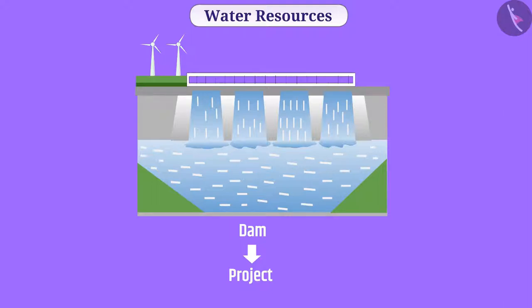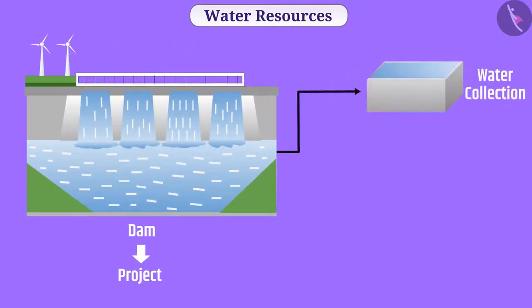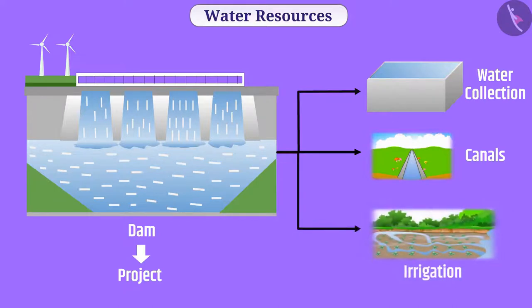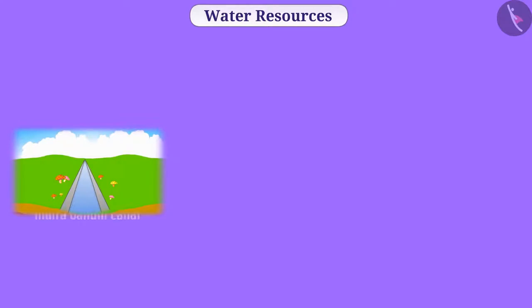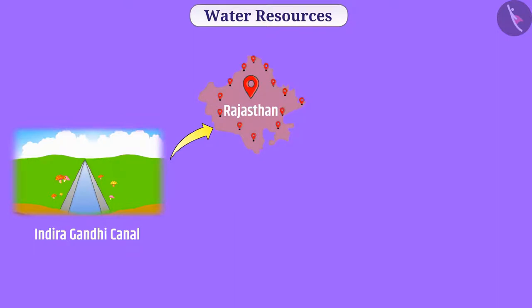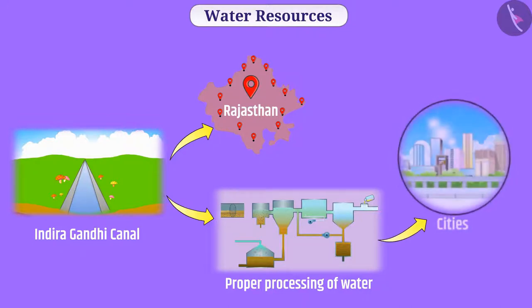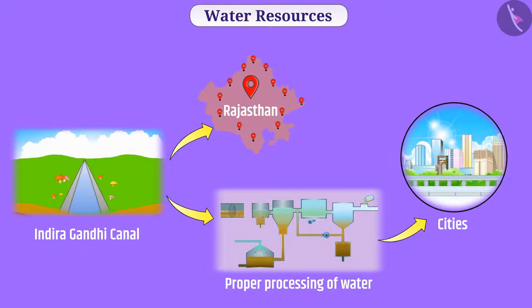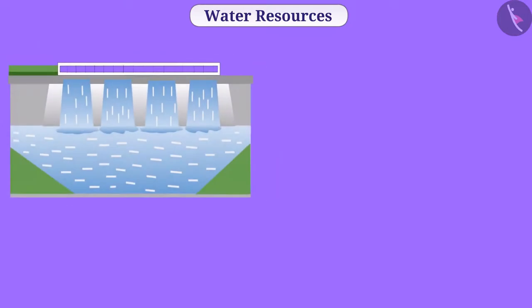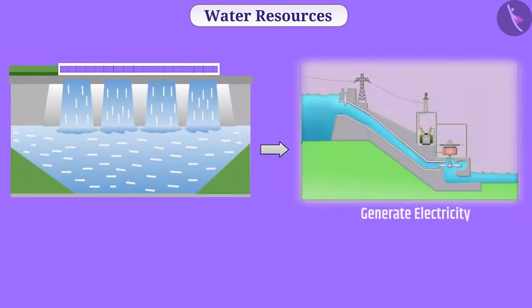There are many benefits of building a large dam — a sufficient amount of water can be stored in them. Water can be carried away with the help of canals and used for irrigation. For example, with the help of Indira Gandhi Canal, water has been transported to many places in Rajasthan. After proper processing, water is transported to cities through pipelines. An important use of dam water is also to generate electricity.